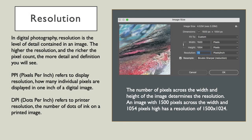In digital photography, resolution is the level of detail contained in an image. The higher the resolution and the richer the pixel count, the more detail and definition you'll see. PPI is pixels per inch, and this refers to display resolution on screen — how many individual pixels are displayed in one inch of a digital image. DPI, dots per inch, refers to printer resolution, the number of dots of ink on a printed image.